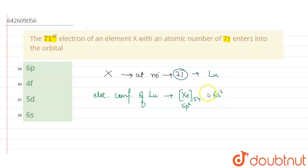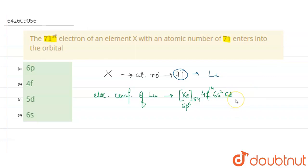With 15 electrons remaining, we fill 4f¹⁴, which leaves only one electron. After 4f¹⁴, we have 5d, where we can fill up to 10 electrons, but we only have one left, so it will be 5d¹. From this electronic configuration, we can see that the last electron is in 5d.